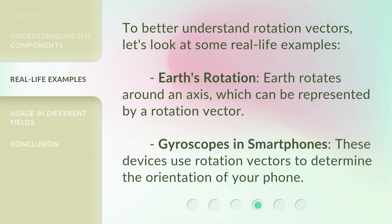To better understand rotation vectors, let's look at some real-life examples. Earth's rotation: Earth rotates around an axis, which can be represented by a rotation vector. Gyroscopes in smartphones: these devices use rotation vectors to determine the orientation of your phone.